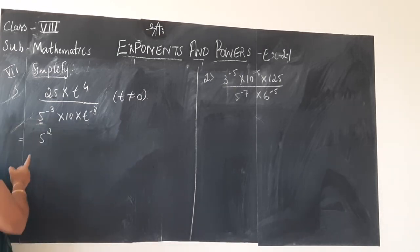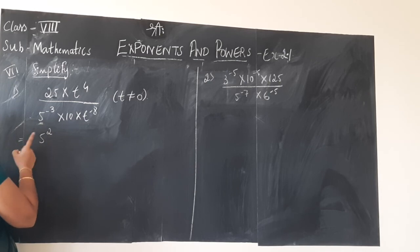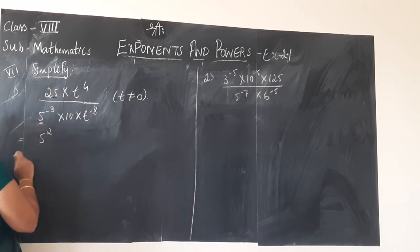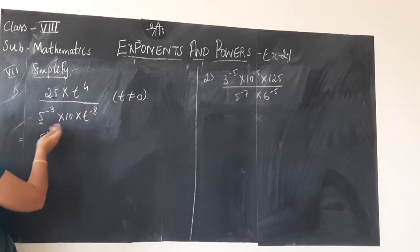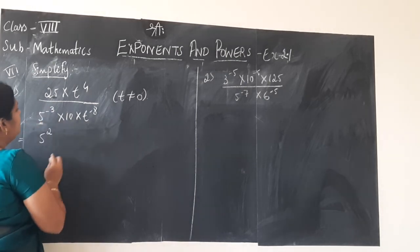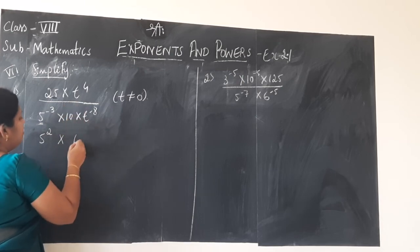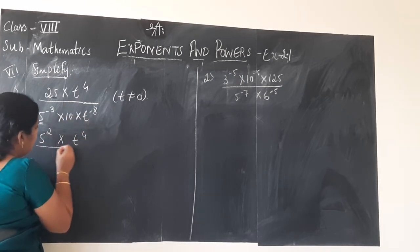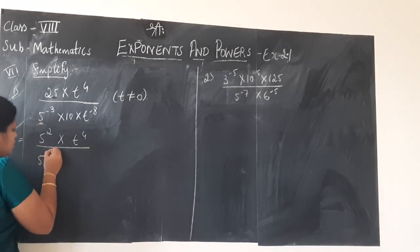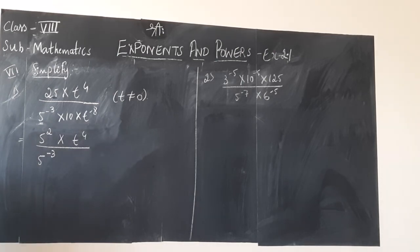That way you should analyze it. So 25 — from squares and square roots chapter — 5 square is now in the numerator. I will write it as 5 square into t to the power 4, and I am not touching t for now, writing it as is. Grouping we will do later. 5 to the power minus 3 is already in the simplest form, I will write it as it is.